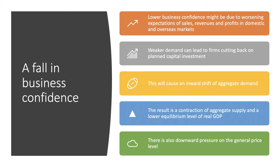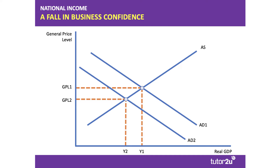The result — other factors remaining the same — is a contraction of aggregate supply, a movement down the aggregate supply curve, a fall in the equilibrium level of real GDP, and downward pressure on the price level. As AD shifts inward from AD1 to AD2, there is downward pressure on inflation and a risk that the fall in investment could perhaps trigger a recession.